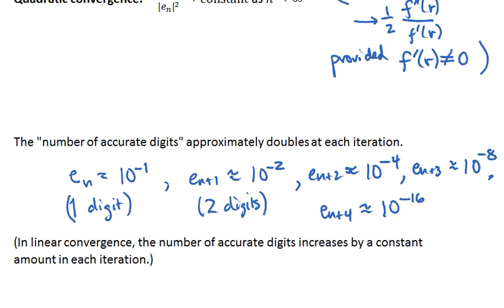That's much, much faster than linear convergence, where we might go from 10⁻¹ to 10⁻², then 10⁻³, 10⁻⁴, 10⁻⁵, 10⁻⁶, and so on. It's the difference between linear growth and exponential growth.